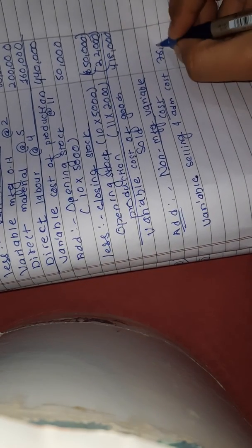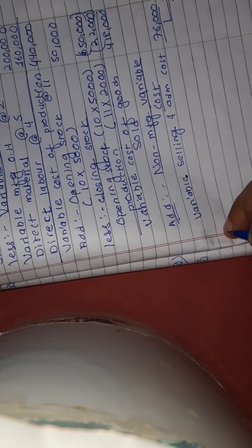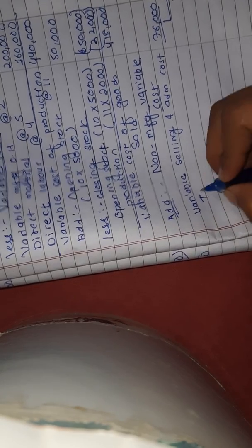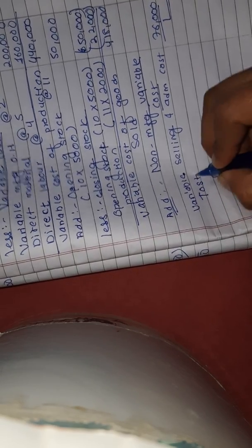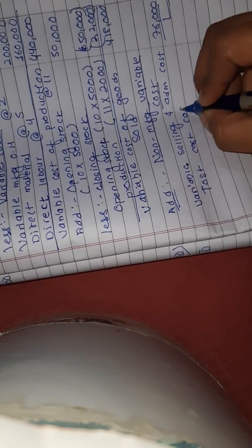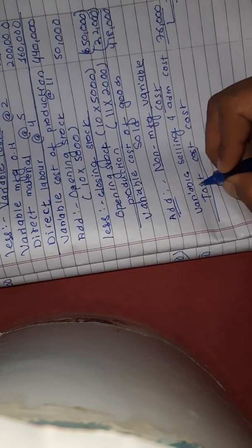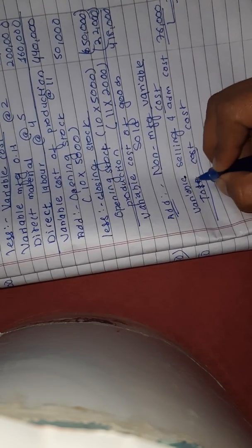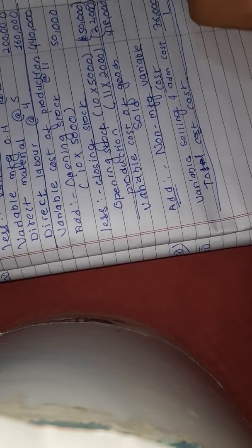This gives us 26,000. Total variable cost level — even today, to calculate total variable cost, it comes to four lakh seventy-six thousand.